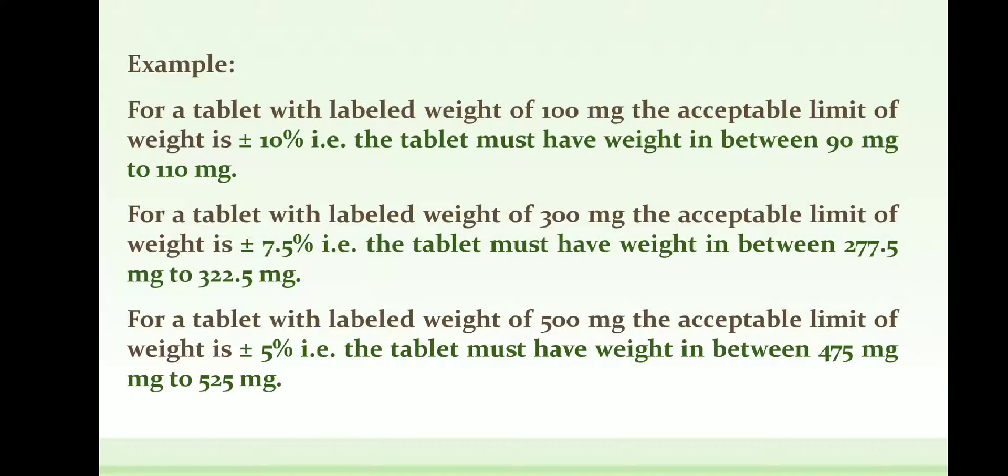For a tablet with a labelled weight of 100 mg, the acceptable limit is ±10%, meaning the tablet must weigh between 90 mg and 110 mg as per USP. For a tablet with a labelled weight of 300 mg, the acceptable limit is ±7.5%, so the weight must be between 277.5 mg and 322.5 mg. For a tablet with a labelled weight of 500 mg, the acceptable limit is ±5%, meaning the weight must be between 475 mg and 525 mg.